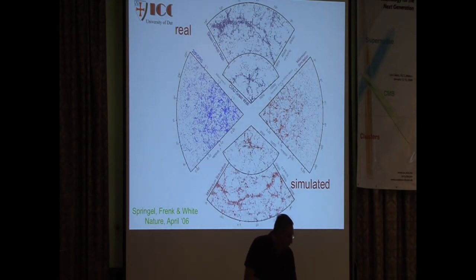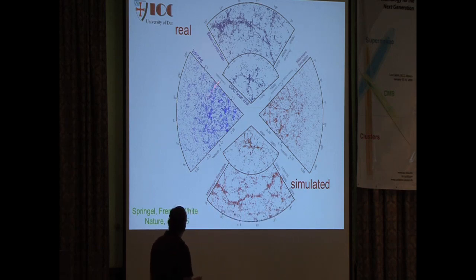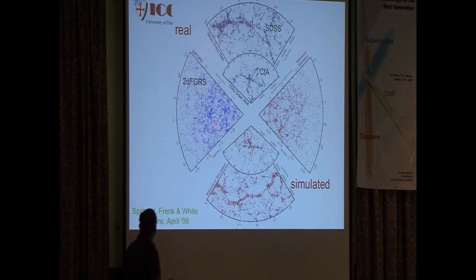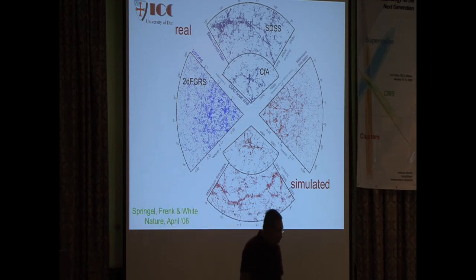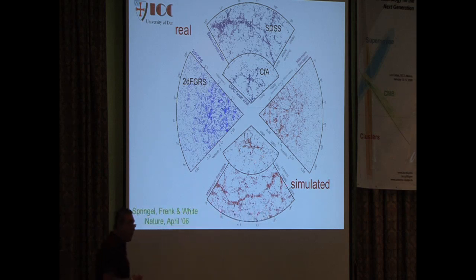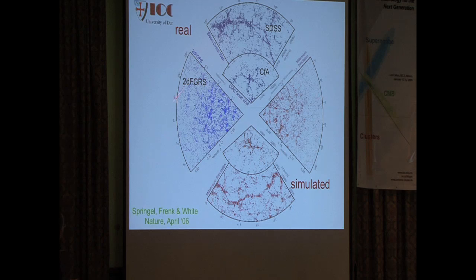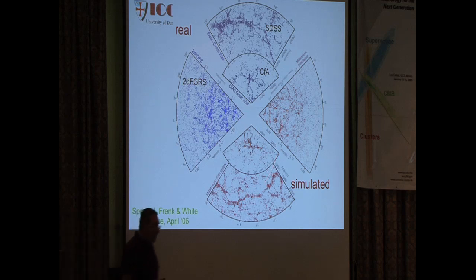Here's a beauty contest: three slices from famous surveys — the 2dF Galaxy Redshift Survey, the Sloan Digital Sky Survey, and the old CFA survey from the 1980s — alongside slices taken from the Millennium simulation populated with galaxies chosen to have the same geometry as the corresponding real data slices. For example, one has the same geometry as the 2dF. Just by eye you can see they look very similar. Likewise for Sloan and CFA. These models are visually very successful.